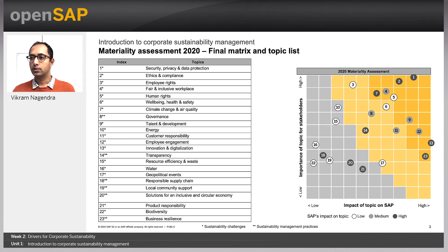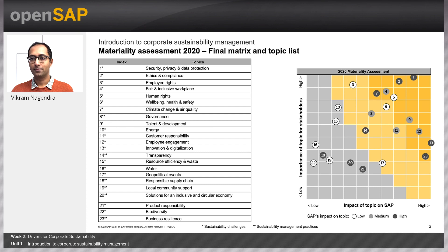The second dimension, which is the outside-in view, covers all the impact areas that external stakeholders expect a corporation to manage well. This dimension also has an influence on companies' valuation — so-called value to business. When these two dimensions are represented on the X and Y axis, the prioritization of impact areas becomes obvious. Corporations need to prioritize their sustainability efforts along the prioritized material topics. Unit 2 of this week will cover materiality analysis in more detail.